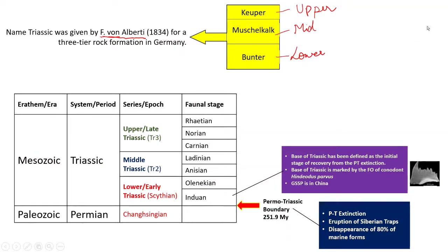Triassic is a period — it holds the status of a period as a geochronologic unit and system as a chronostratigraphic unit in the geological time scale. The Triassic period or system belongs to the Mesozoic era. The transition from Paleozoic to Mesozoic, meaning from the Permian to the Triassic, is a very important geological event in Earth's history.